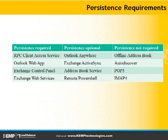When it comes to persistence, there are multiple requirements. Persistence is required for the RPC client access server (MAPI clients), Outlook Web App, Exchange Control Panel, and Exchange Web Services. Persistence is optional for Outlook Anywhere, Exchange ActiveSync, the address book service, and remote PowerShell — if you do not configure persistence for these, they will run fine but you might experience a small performance hit. Persistence is not required for the offline address book, auto-discover, POP3, or IMAP4. These are the point-and-shoot protocols: you set up a connection to the server, get your information, and disconnect the session.